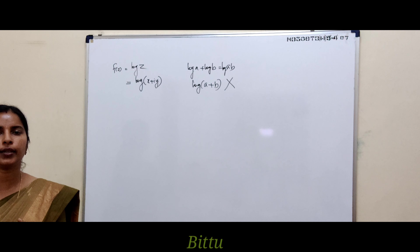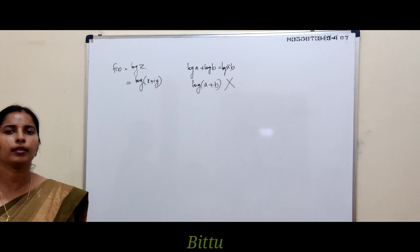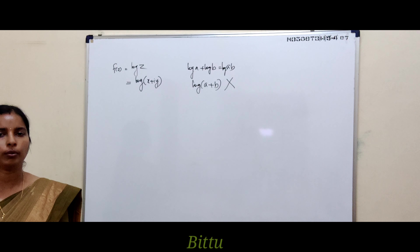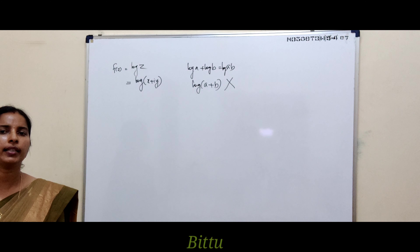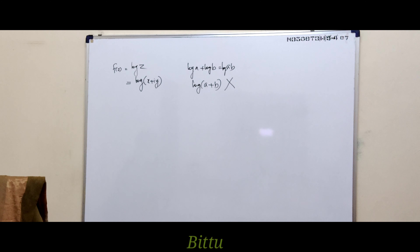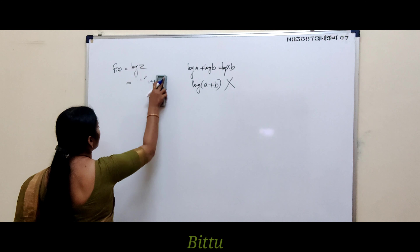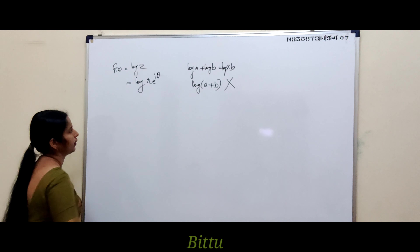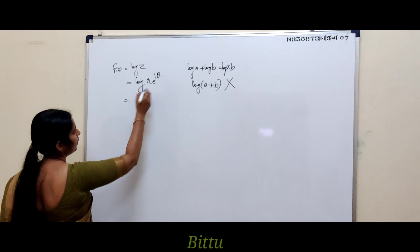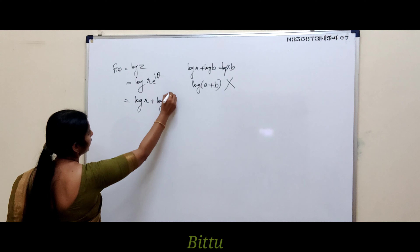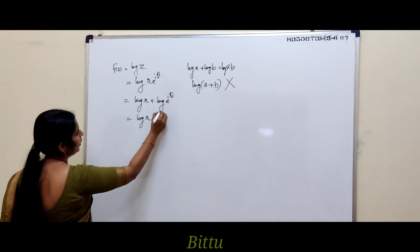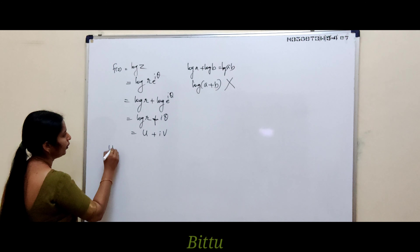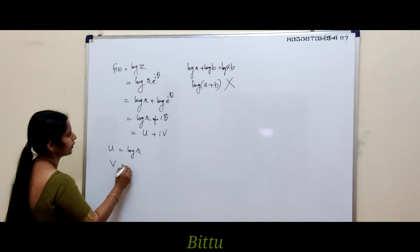There are two representations for a complex number: Cartesian form and polar form. For the logarithmic function, we use the polar form z = Re^(iθ). Then log z = log R + iθ, since log(e^(iθ)) = iθ. This is in the form u + iv with u = log R and v = θ.